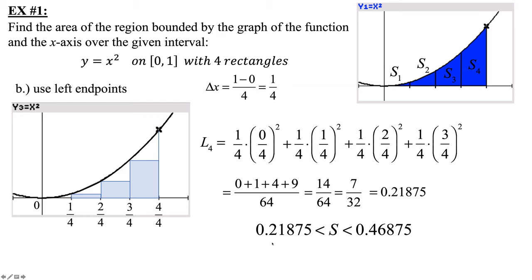The left endpoint gives an underestimation because we have missing area. The right endpoints were all above the curve — that was an overestimation, so that area was too big. My left endpoint gave 7 over 32, or 0.21875. My right endpoint gave 0.46875, which was 15 over 32. It almost looks like the right endpoint is more than twice as big as the left, so using such small rectangles is not ideal. What would be nice is to find a happy middle ground — hint, hint: midpoint.